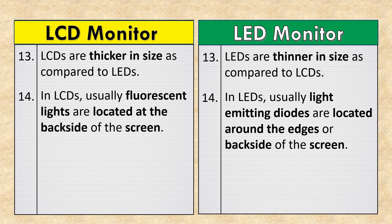In LCDs, fluorescent lights are usually located at the back side of the screen. In LEDs, light-emitting diodes are usually located around the edges or back side of the screen.